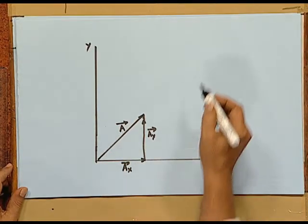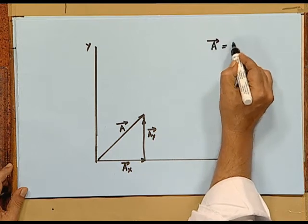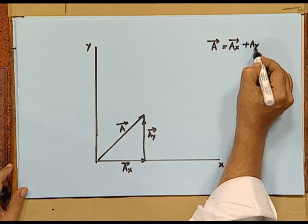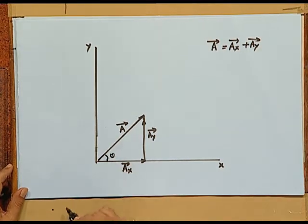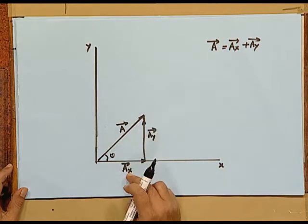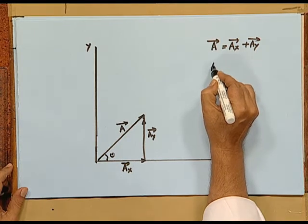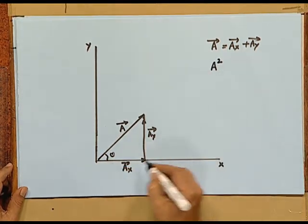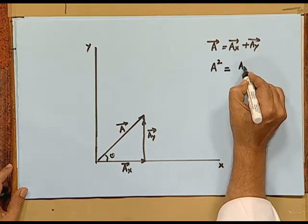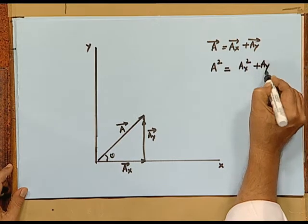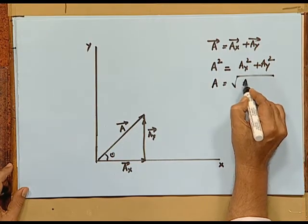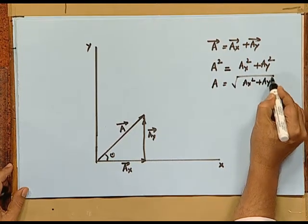Now, how do I use this in adding two vectors? Vector A is resolved into two components along x and y directions. Vector A is written as Ax vector plus Ay vector. Let the angle be theta. From the Pythagoras theorem, the square of the magnitude of vector A equals Ax squared plus Ay squared. So if you know the components of the vectors, you know the magnitude — the magnitude of the vector is the square root of Ax squared plus Ay squared.